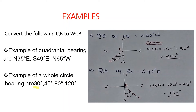We have a Quadrantal Bearing of line AB which is South 36 degrees West — that is 36 degrees from the south pole. Now let's convert this Quadrantal Bearing South 36 degrees West into Whole Circle Bearing. We already have 180 degrees from north to south. For us to find the Whole Circle Bearing, it will be 180 plus 36 degrees to get 216 degrees.